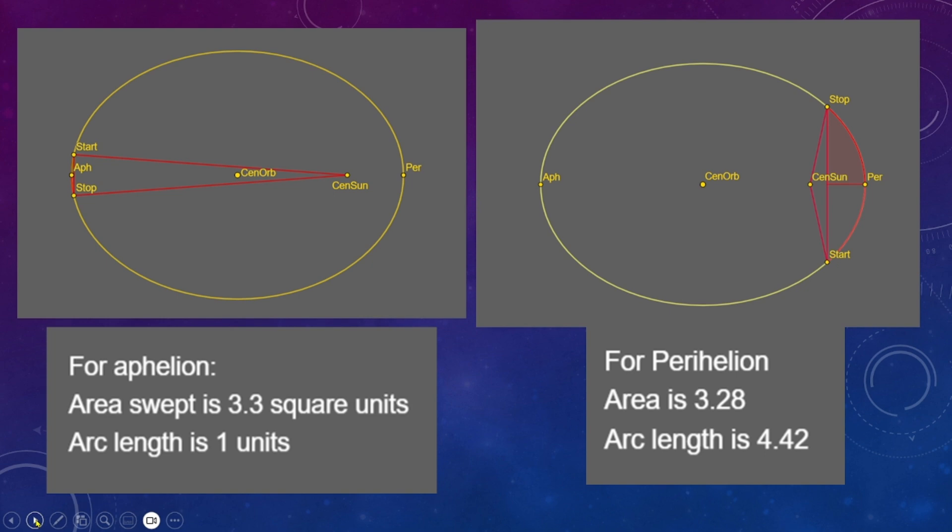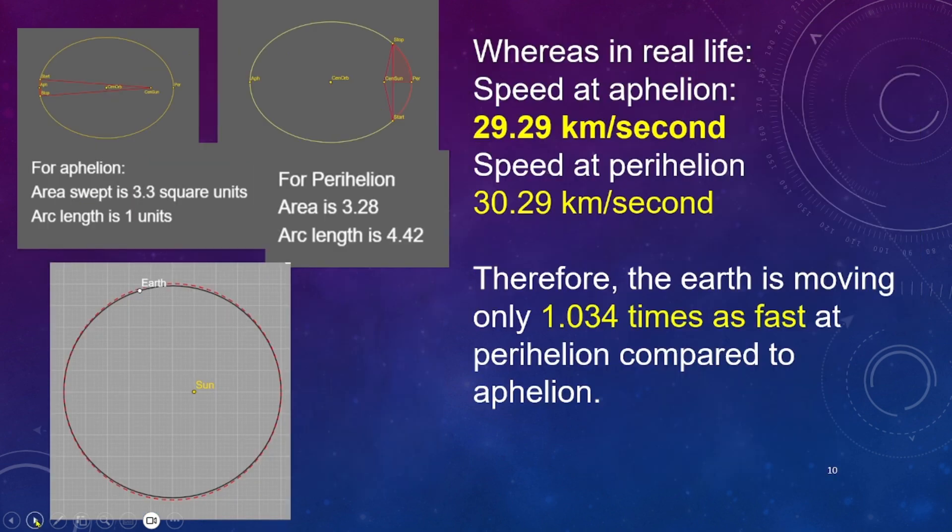Now I'm no physicist, but I think that would interrupt the delicate equilibrium that we enjoy today. In real life it's actually moving only about 1.034 times as fast at perihelion compared to aphelion. And that's because the lower light gray model here is closer to reality.